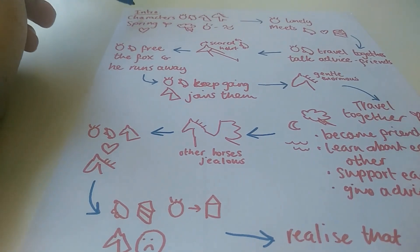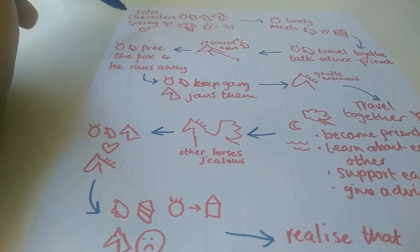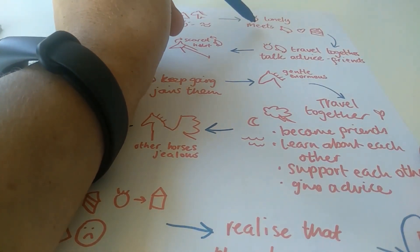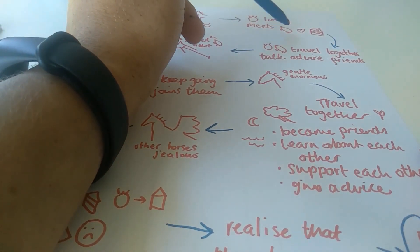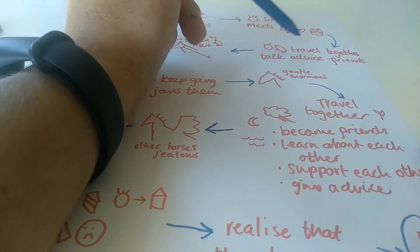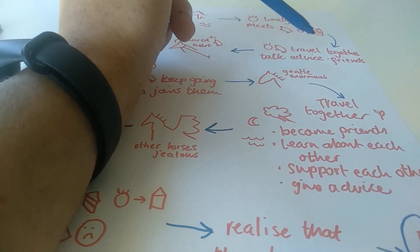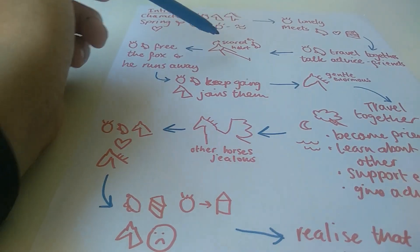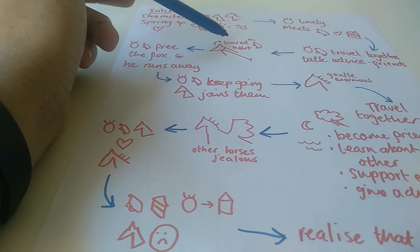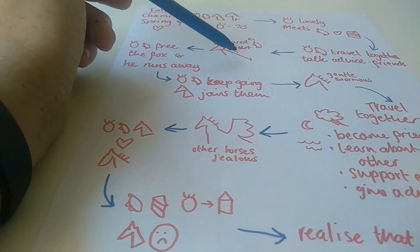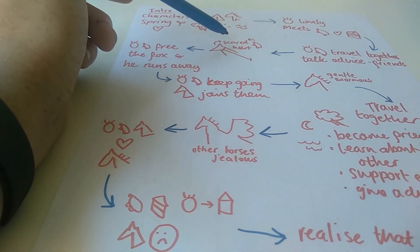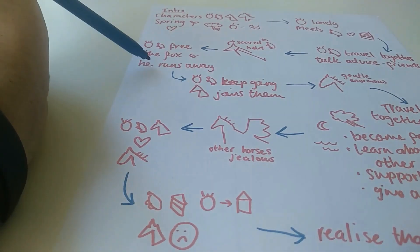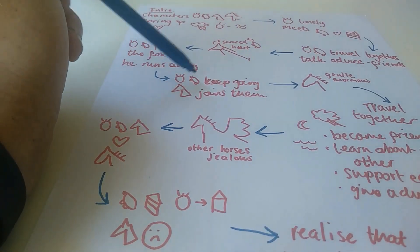So we start by introducing our characters and we find out that it's springtime. And we start with the boy who is lonely and he meets a mole that loves cake. The boy and the mole, they travel together and they give each other advice and they become very good friends. And they meet a fox who is scared and he's trapped inside a snare. And the mole is also scared. But the boy and the mole free the fox anyway. And he runs away.